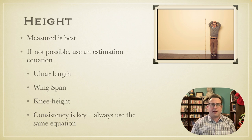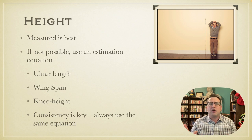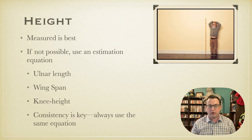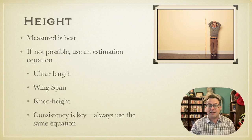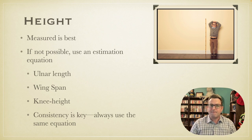There's also knee height, though I find it difficult for geriatric patients to bend their knee at 90 degrees. All of these are based on the idea that the human body is roughly proportionally the same across the board — we know that's not exactly true, but an estimate is way better than just asking someone how tall they are. Consistency is key: always use the same equation every time, because we're looking for trend lines over time.